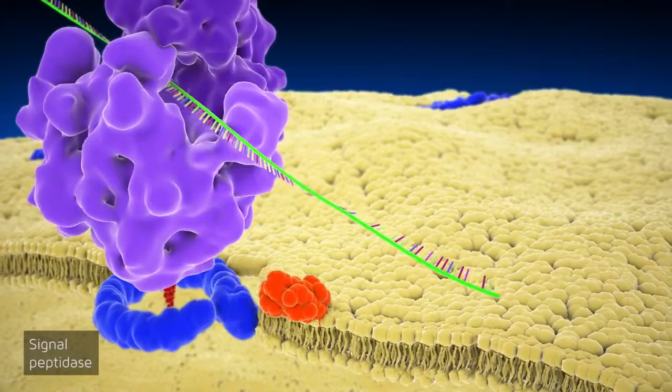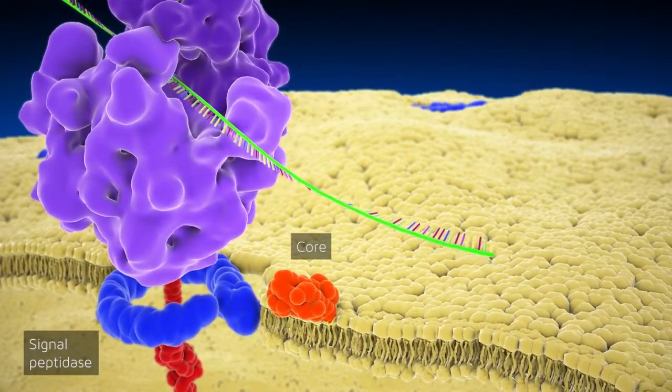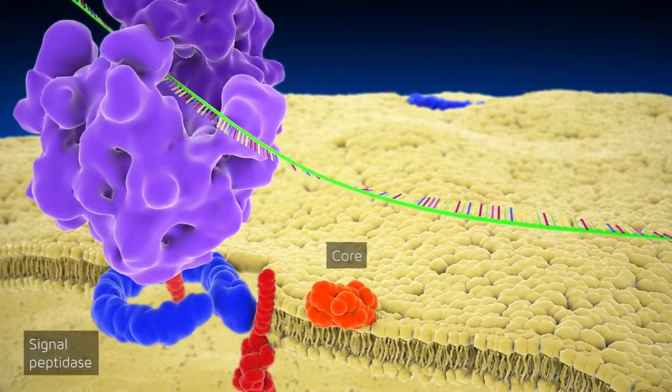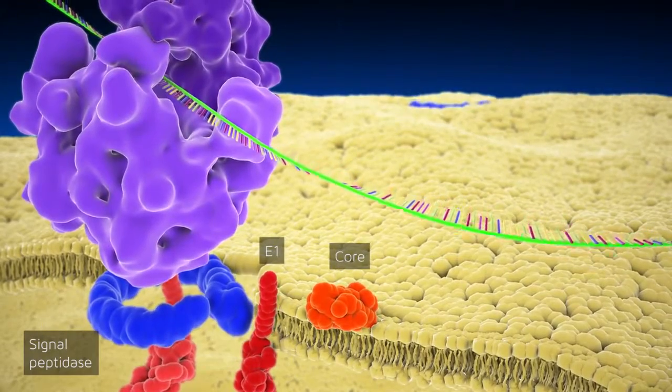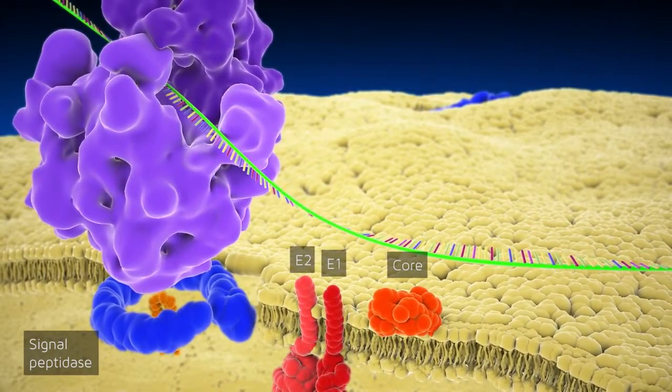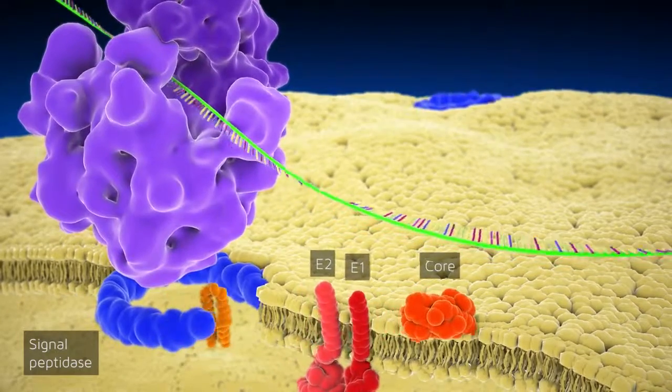Translation can thereby proceed further, giving rise to a polyprotein which is cleaved by cellular signal peptidases and by the viral proteases into 10 mature proteins.